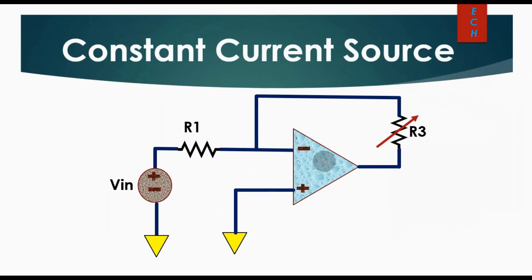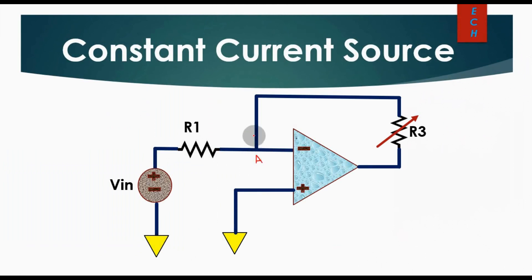You can see here the operational amplifier — this is the non-inverting terminal, which is connected to ground, and this is the inverting terminal, which is connected via resistance R1 to input source VIN and then ground. From here, let us call this node A, which has a feedback connected via a variable load resistance.